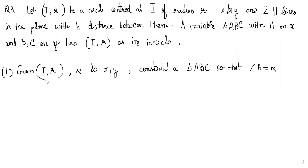The first part of the question says: given this incircle I and R, alpha, and lines X and Y, alpha is a constant such that you construct a triangle so that angle A is equal to alpha. So you have to make IR the incircle of this triangle, and you are given two parallel lines.